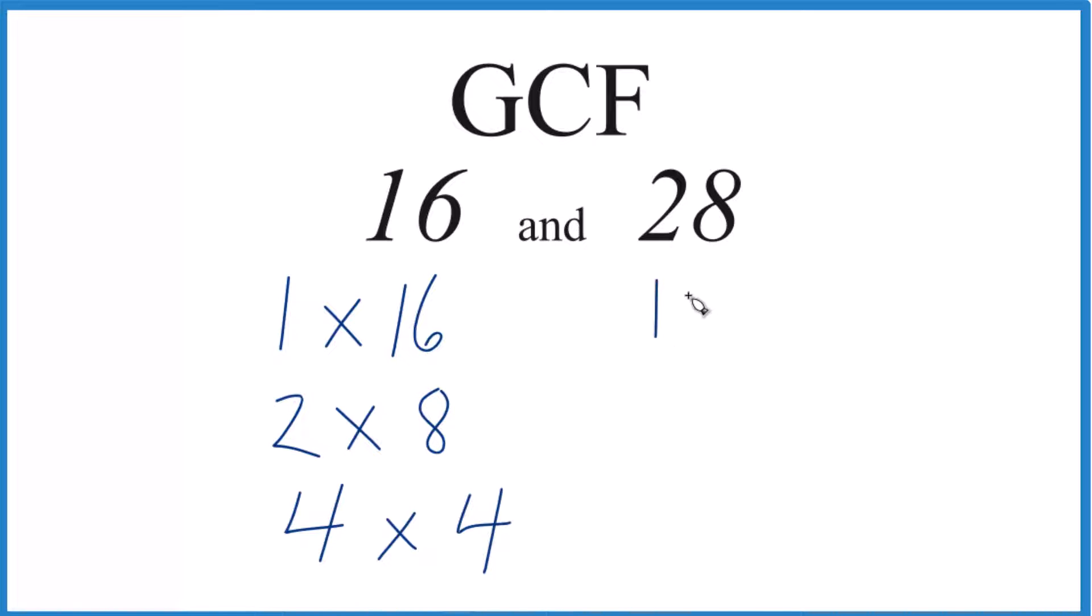For 28, we have 1 times 28, that equals 28, 2 times 14, and then 4 times 7. So that's it.